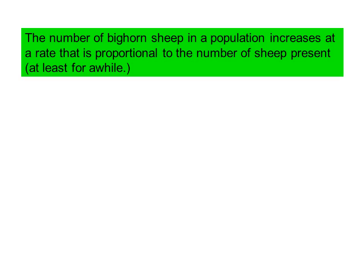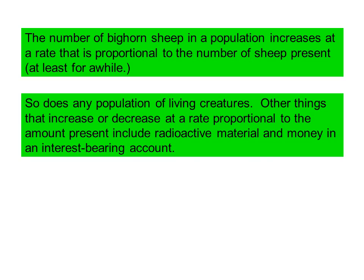The number of bighorn sheep in a population increases at a rate that is proportional to the number of sheep present, at least for a while. So does any population of living creatures. Other things that increase or decrease at a rate proportional to the amount present include radioactive material and money in an interest-bearing account.